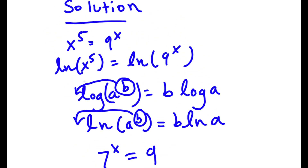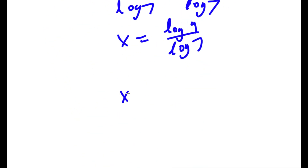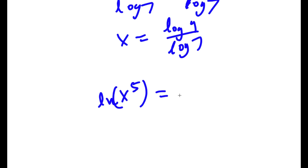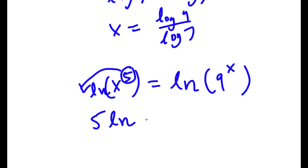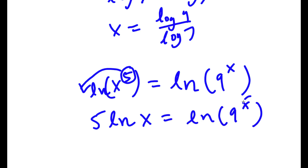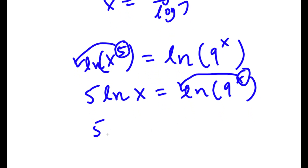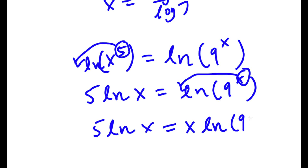So now going back to our problem — we have ln x to the power of 5 is equal to ln 9 to the power of x. Using that property, I'm going to move my exponent to the front, so now I have 5 times ln x is equal to ln 9 to the power of x. Now I'm going to do the same thing with that side and move it to the front, so I have 5 times ln x is equal to x times ln 9.